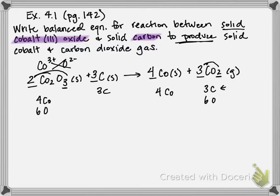So we have four cobalts on the reactant side, four on the product. We have six oxygen on the reactant side, six on the product. And then we have three carbon on the reactant side and three carbon on the product side.